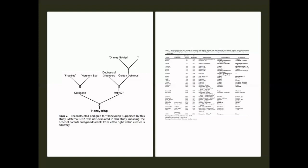Keepsake was then bred with MN1627, which is a crossbreed of Duchess of Oldenburg and Golden Delicious. MN1627 and Keepsake when crossbred created Honeycrisp, one of the most popular apples in North America right now.